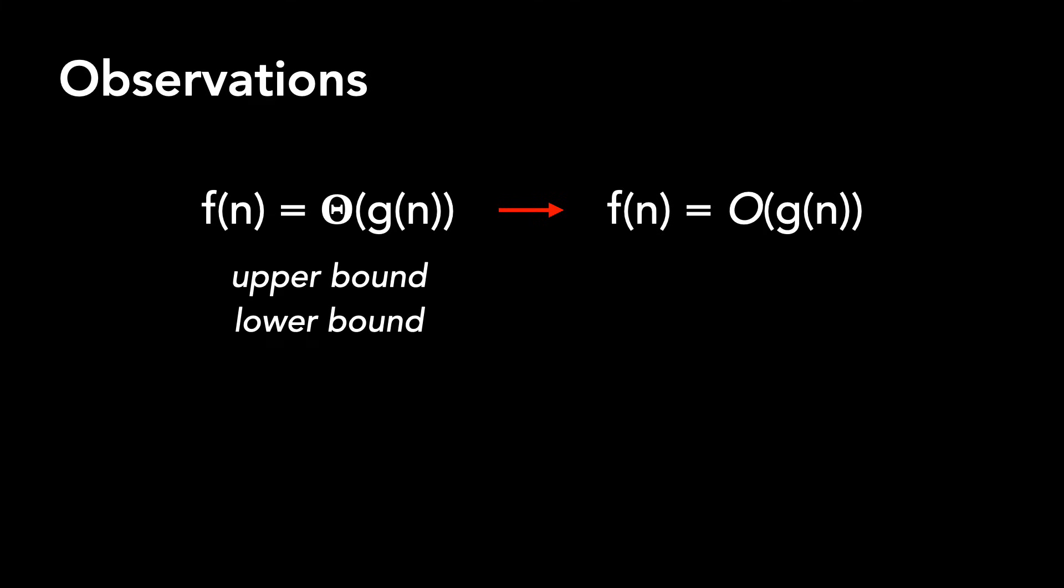One observation between theta and big O we can make is that when we say f(n) = Θ(g(n)), this also implies that f(n) = O(g(n)). We can conclude this because theta is more strict than big O. Theta provides an upper and lower bound, whereas big O is just an upper bound.